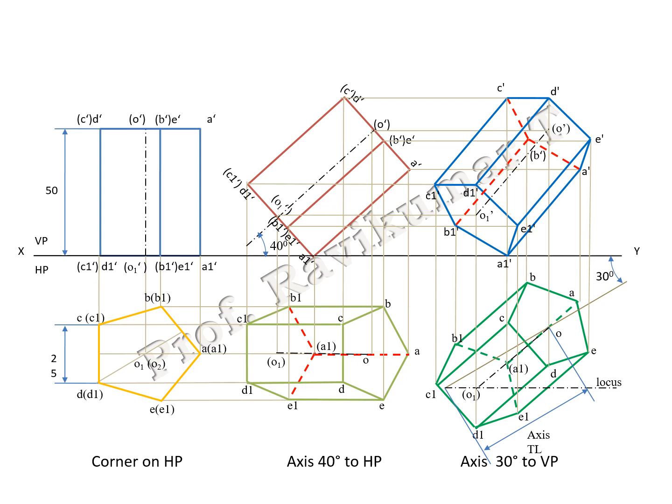So it is very easy to understand: if the word 'appears' is present along with the axis inclined to both planes, it is a without locus problem. If the word 'appears' is absent and axis is inclined to both planes, it is a with locus problem. Thank you. In the next video I will take up the projection of hexagonal prism.